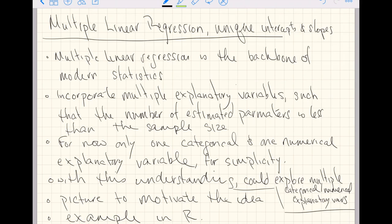For now, we are only going to focus on one categorical and one numerical explanatory variable for simplicity. It is my opinion that as long as you have this understanding of how categorical and numerical explanatory variables can be included in a multiple linear regression model, you could very easily extend this to include multiple categorical or multiple numerical explanatory variables.